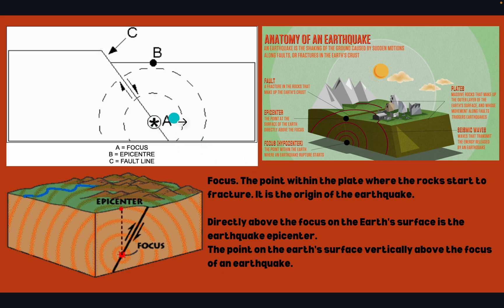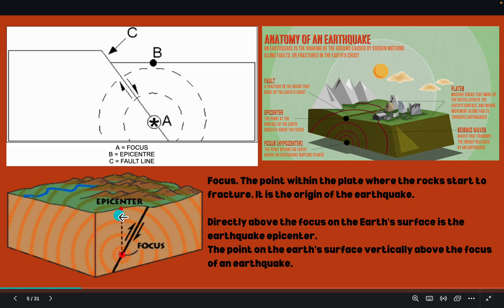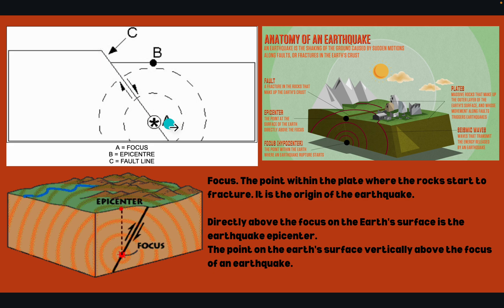It's really important to know the differences between all of these. So A is the focus, and B is the epicenter, which is directly above the focus — you can see the dotted lines. And C is the fault line. The focus is the point within the plate where the rocks start to fracture; it is the origin of the earthquake. Directly above the focus on the Earth's surface is the earthquake epicenter — the point on the Earth's surface vertically above the focus.